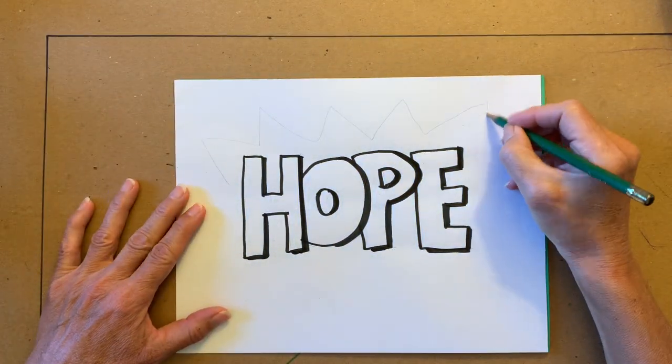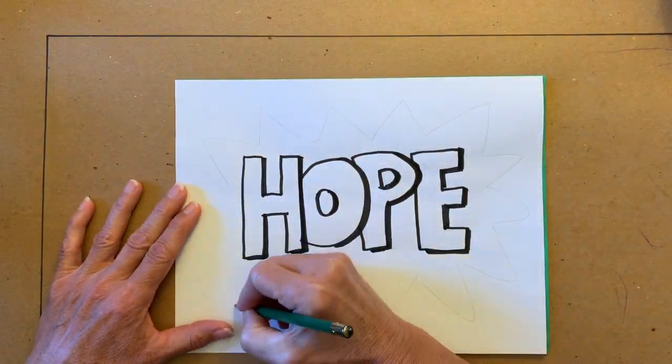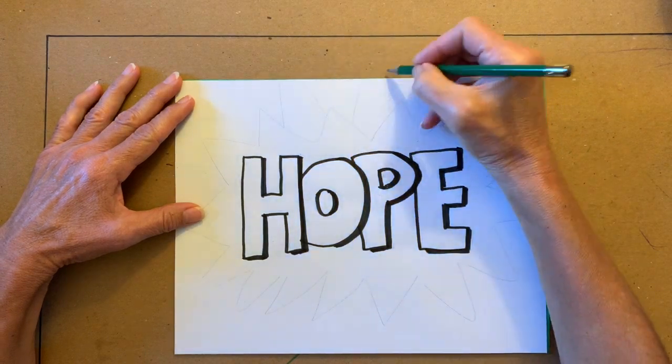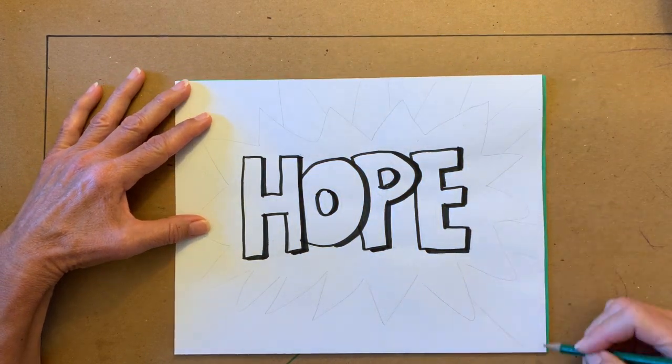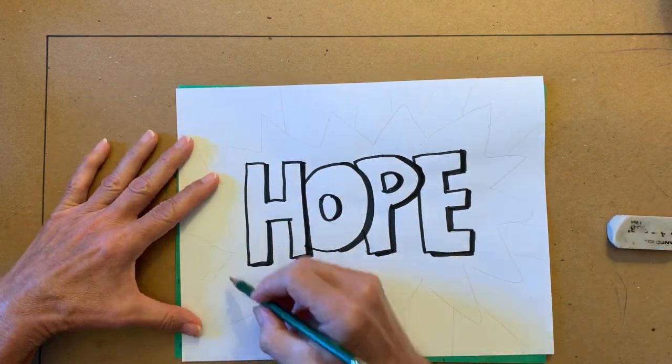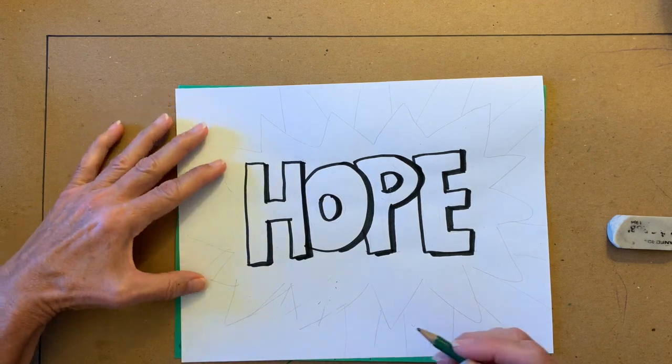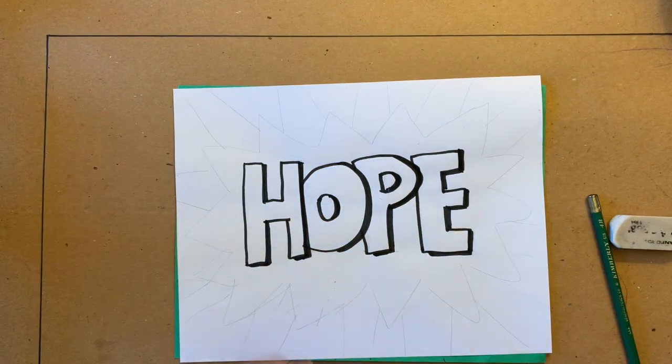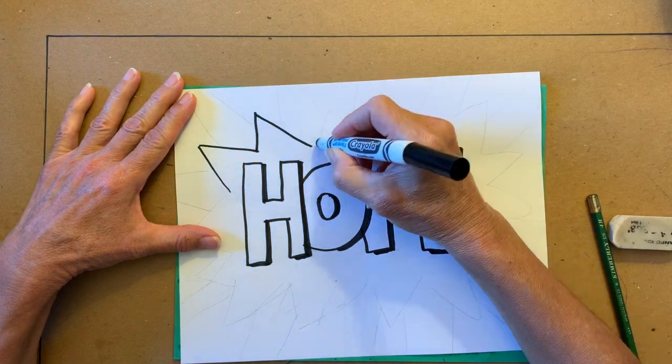Add emphasis to your word by drawing lines and shapes around it. I used zigzag lines and then added other lines and shapes. Go over your lines with a black marker.